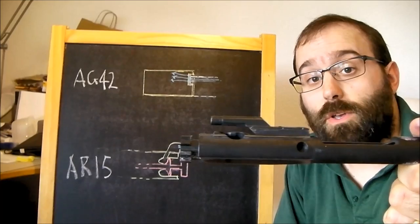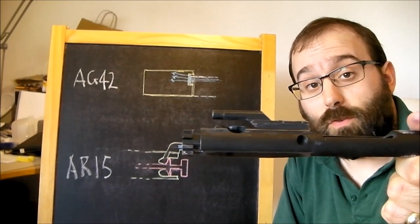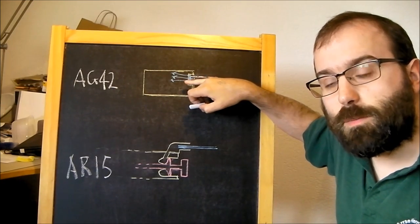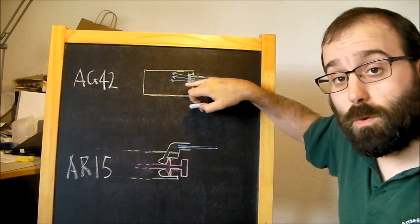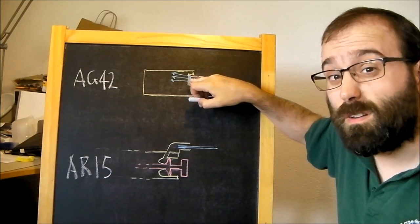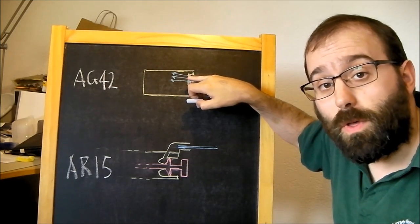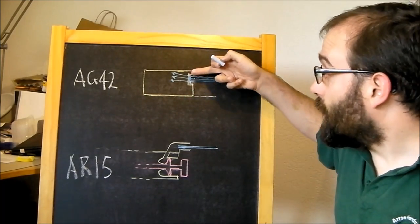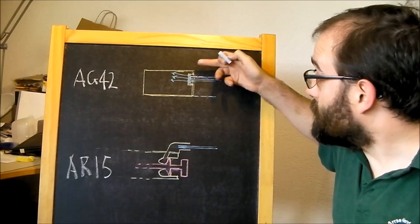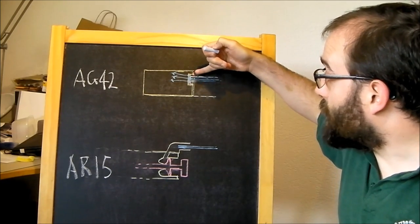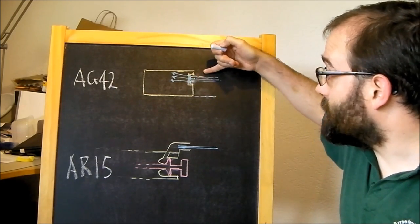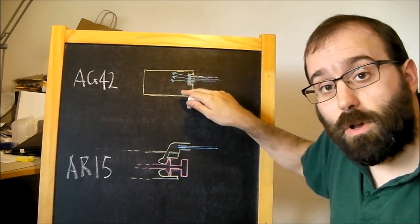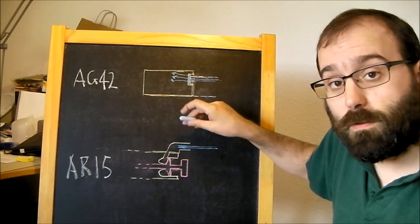However, what Eugene Stoner developed was rather cleverer. Now part of the issue with an AG-42 type system, as anyone who's used one will tell you, is that it's actually quite violent. The carrier moves back with quite some velocity and you get a good squirt of gas in your face. There's another problem with it, which exists also in piston guns, which is that because the piston is effectively acting up near the top of the carrier, it causes it to tip. So the carrier has to run in good rails, good quality rails.